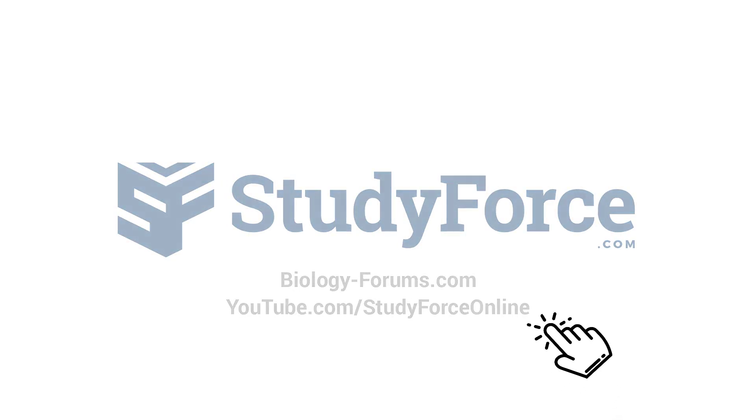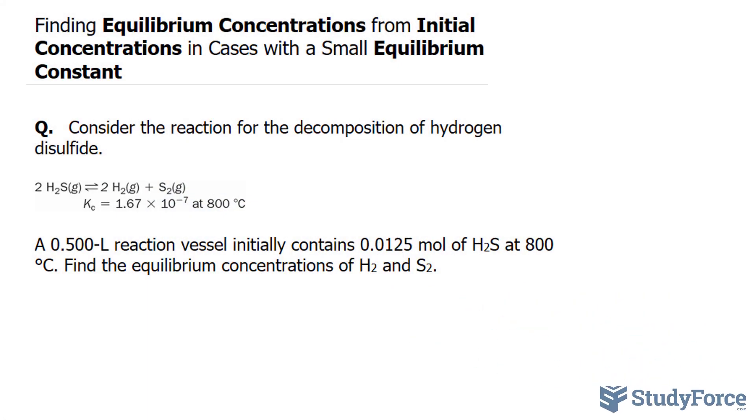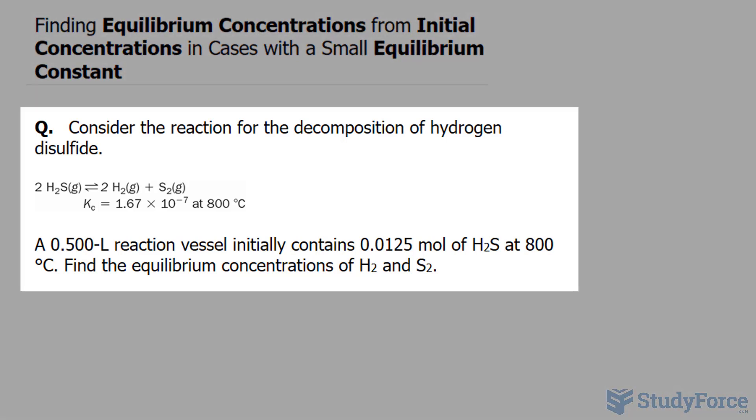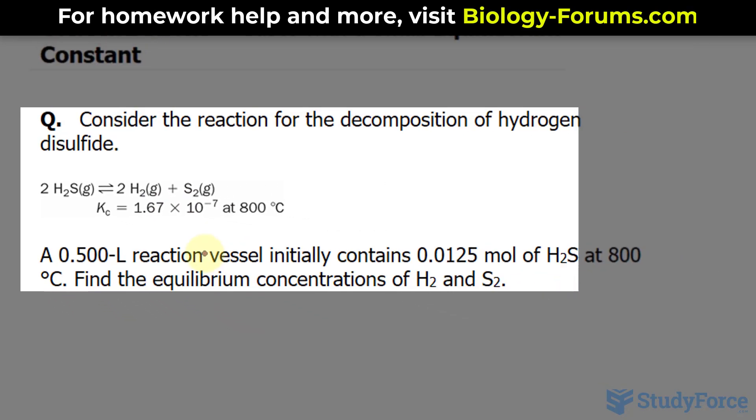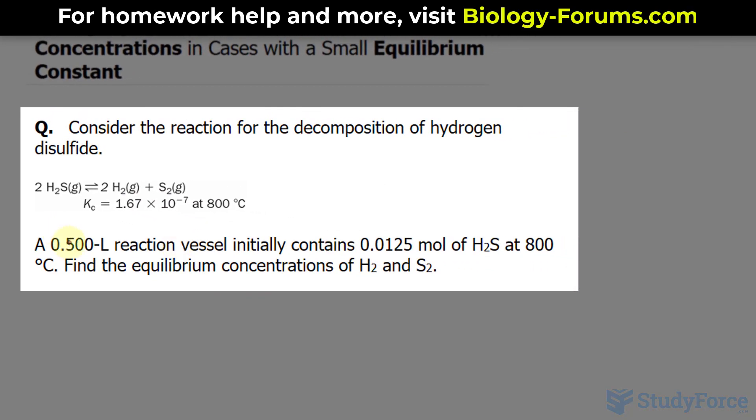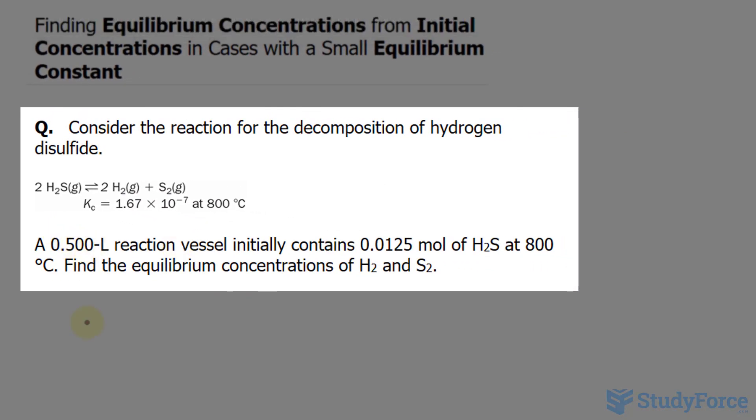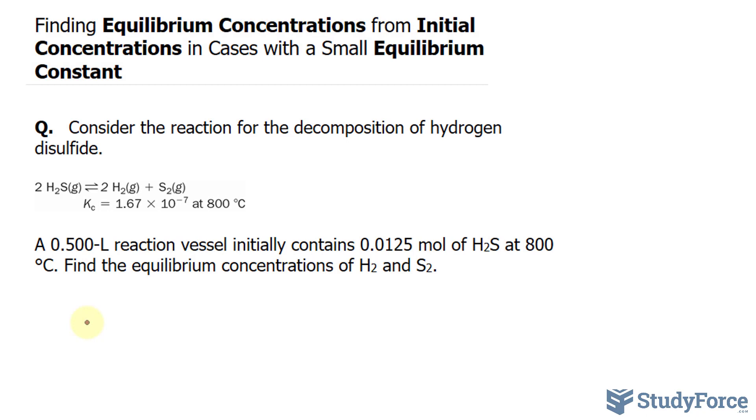In this lesson, I'll show you how to find the equilibrium concentrations from initial concentrations in cases with a small equilibrium constant. The question reads, consider the reaction for the decomposition of hydrogen disulfide. Notice that the equilibrium constant is really small. We have something times 10 to the power of negative 7.